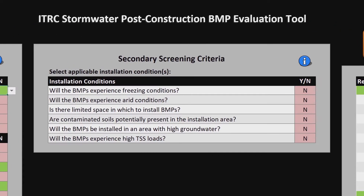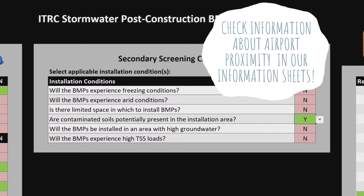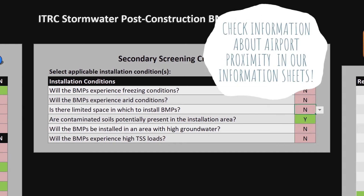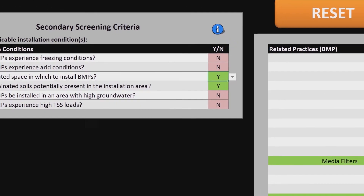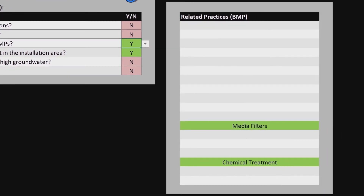Next, secondary screening choices will pop up and you'll need to choose the ones that apply to Acme Industrial Park. Because your site might have contaminated soils, you'll want to only include BMPs that aren't affected by contaminated soils. You'll also want to make sure you're only going to see BMPs that can be installed near airports. Voila! The tool screens out everything except for media filters and chemical treatment.